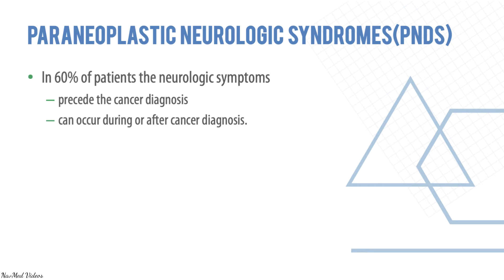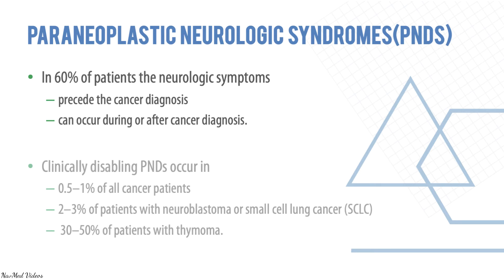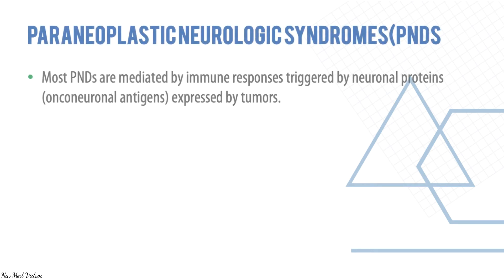Neurological syndromes are part of paraneoplastic syndrome. About 60% precede the cancer diagnosis, but they can occur during or after. They are clinically disabling in only 0.5–1% of cancer patients, with 2–3% associated with neuroblastoma or small cell lung cancer and 30–50% of patients with thymoma. Most paraneoplastic neurological symptoms are mediated by immune responses triggered by neuronal proteins expressed by the tumors.